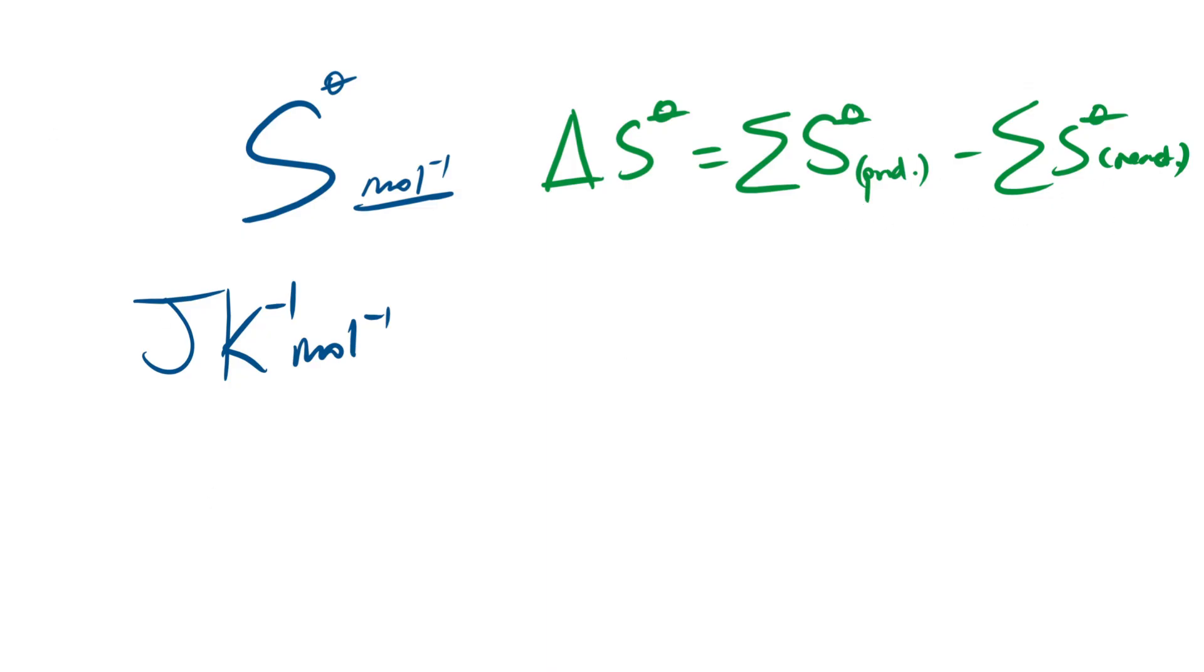Now then, next up, let's look at Gibbs free energy. Now the balance between entropy, our cheeky S value here, and enthalpy, our delta H, is going to determine the feasibility of a reaction, so whether the reaction can actually take place at a specific temperature. So that is going to be given the equation of delta G, Gibbs free energy change, equals our enthalpy change delta H minus T delta S.